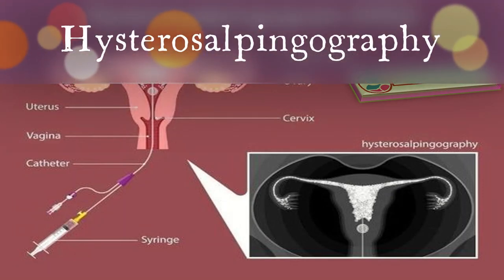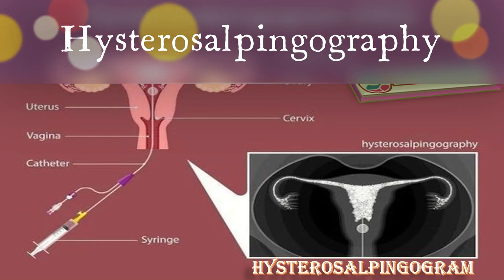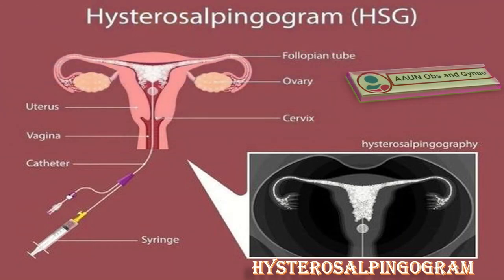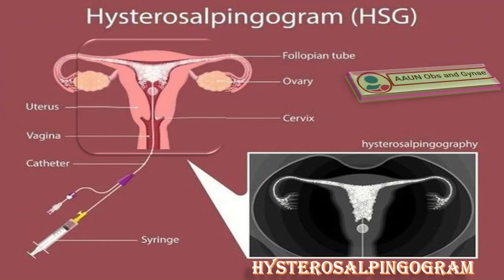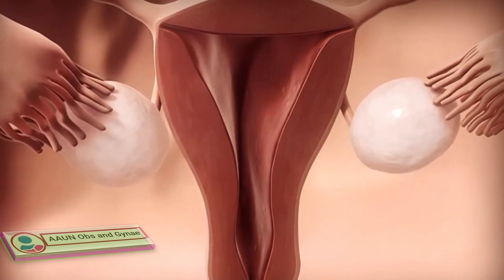Today we will talk about HSG. HSG, or hysterosalpingography, also known as uterosalpingography, is a radiologic procedure to investigate the shape of the uterine cavity and the shape and patency of fallopian tubes. It is a special X-ray procedure in which we use a specific radio-opaque dye to look at the uterus and fallopian tubes.